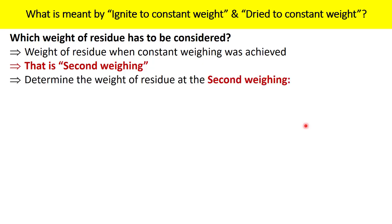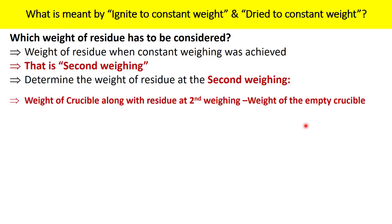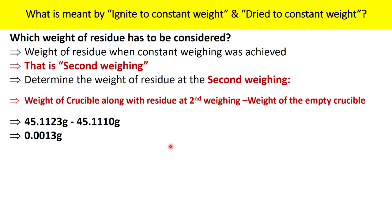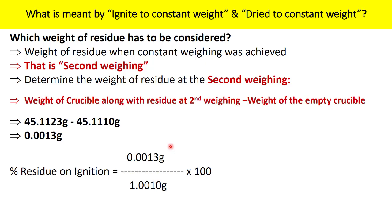So, determine the weight of residue at the second weighing using the formula: weight of crucible with residue at second weighing minus weight of empty crucible. That is 45.1123 minus 45.1110, giving a residue weight of 0.0013 gram. Putting this into the calculation formula gives a residue on ignition of 0.13%. This same approach can also be used to calculate loss on drying with dry to constant weight. Thank you so much.